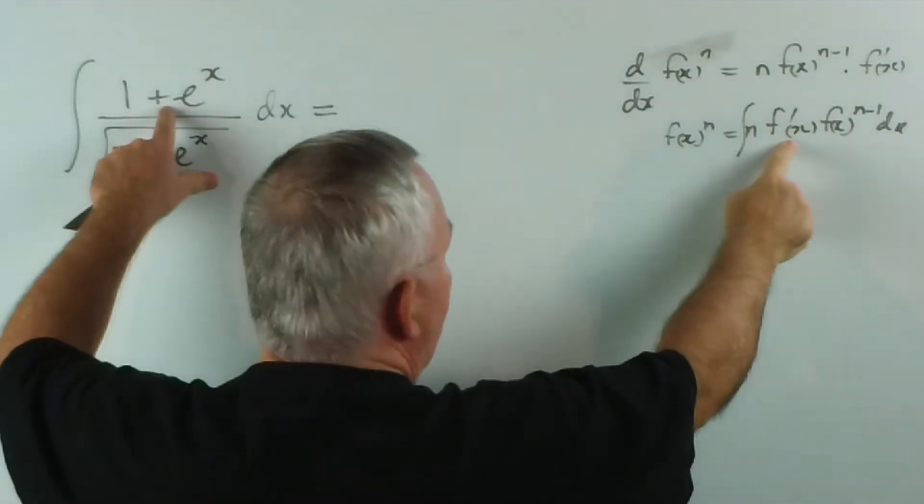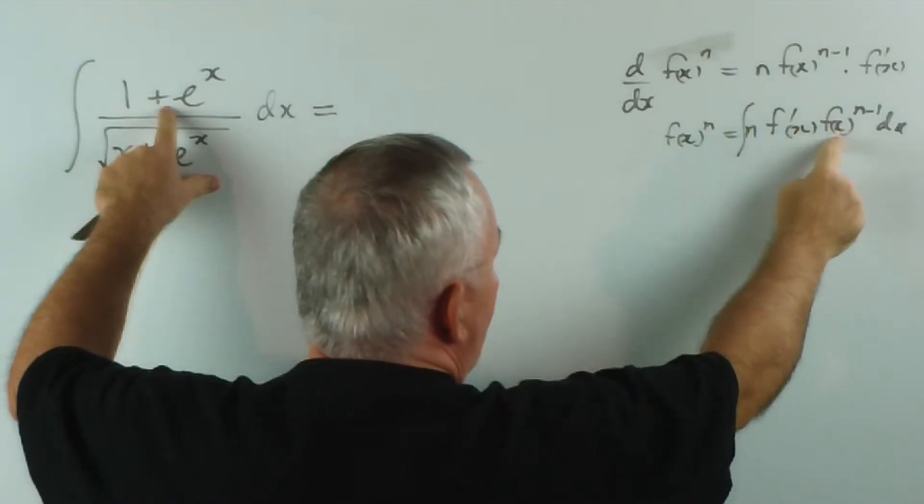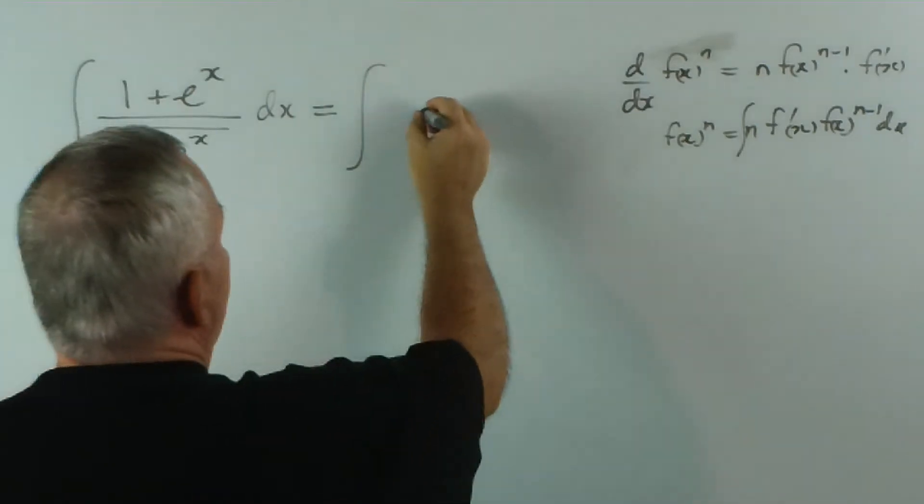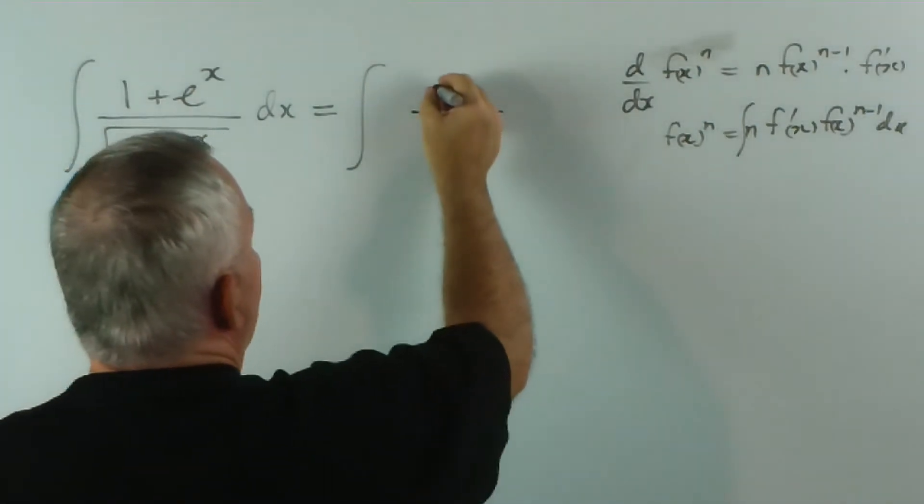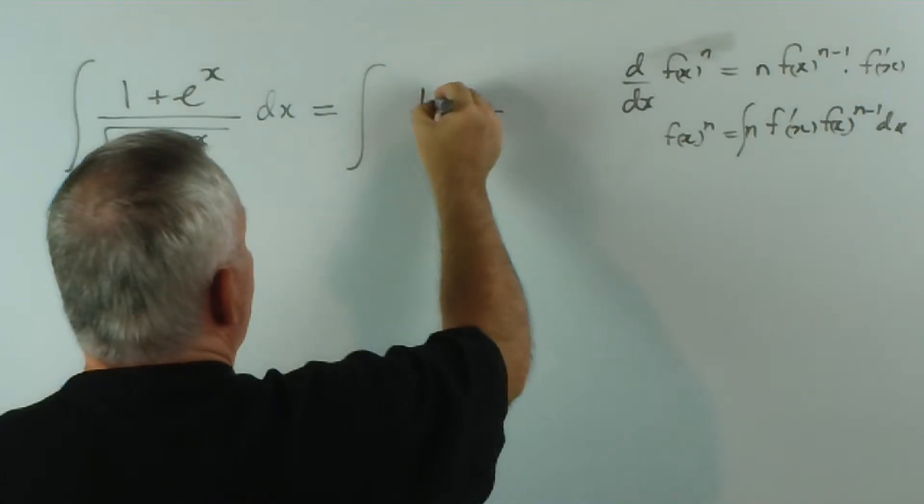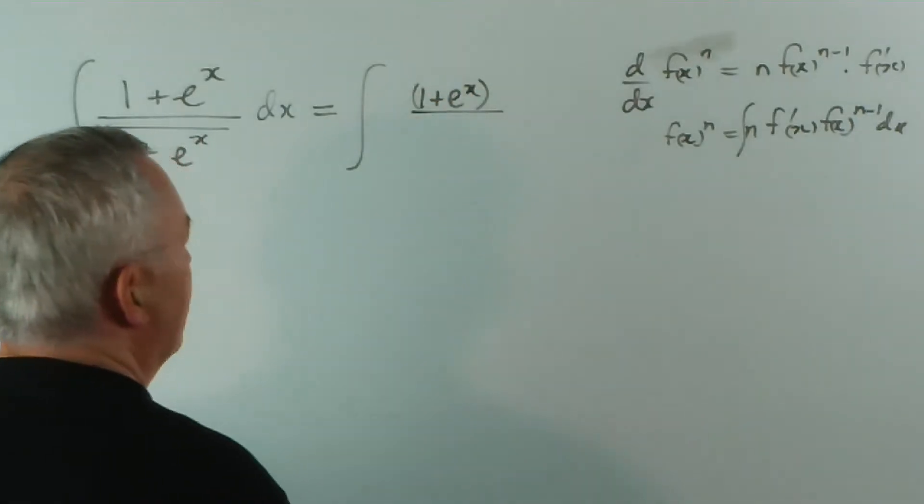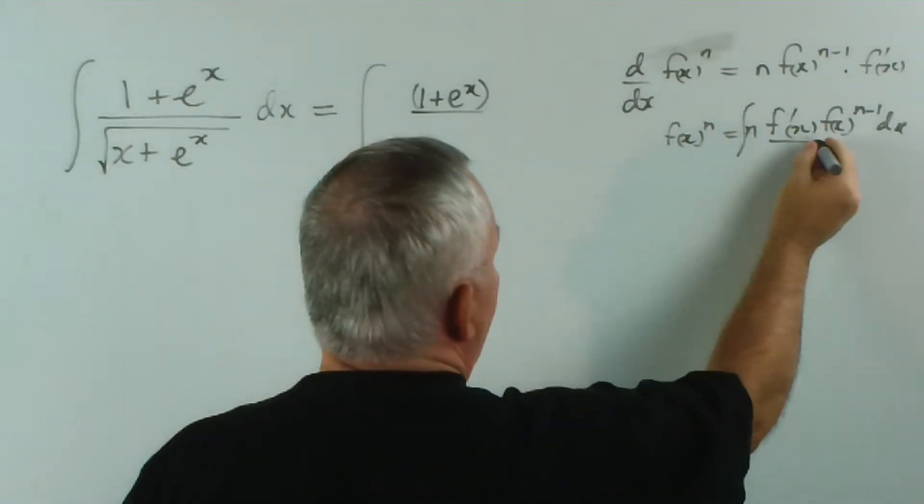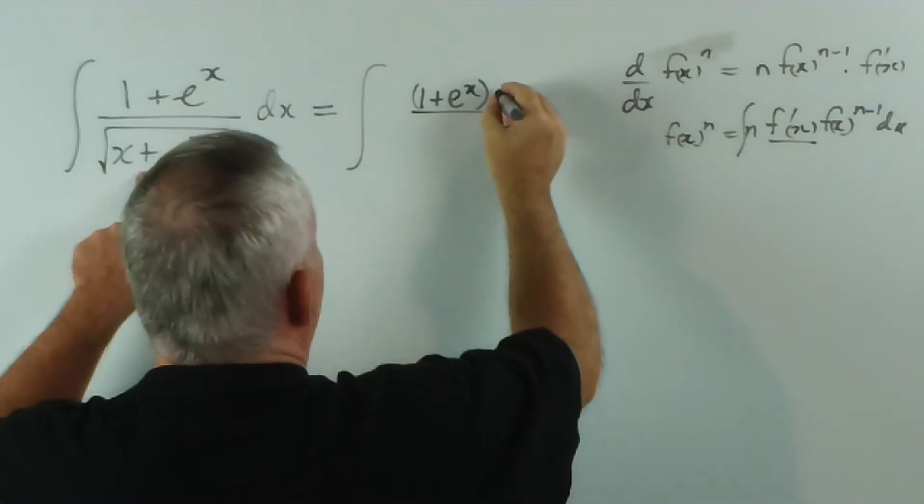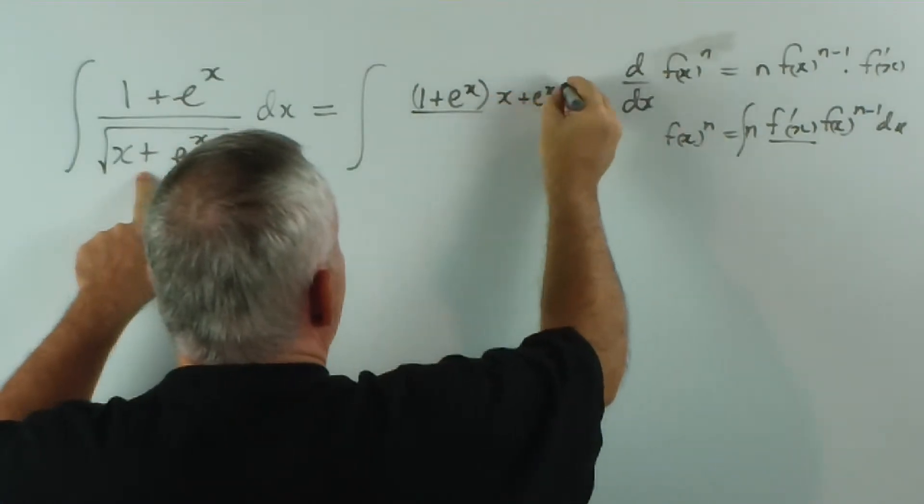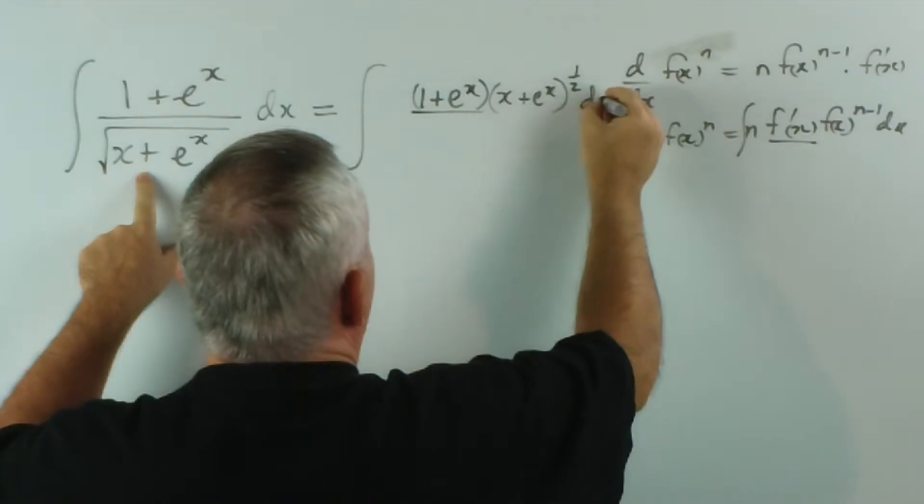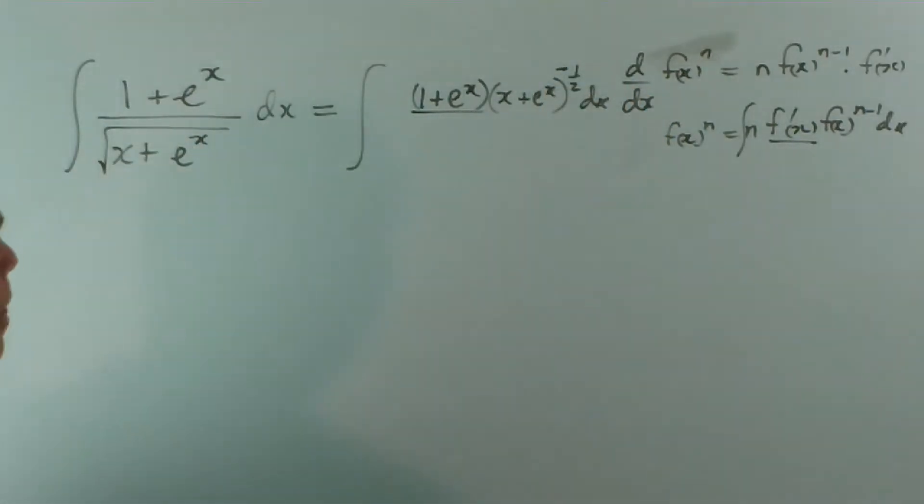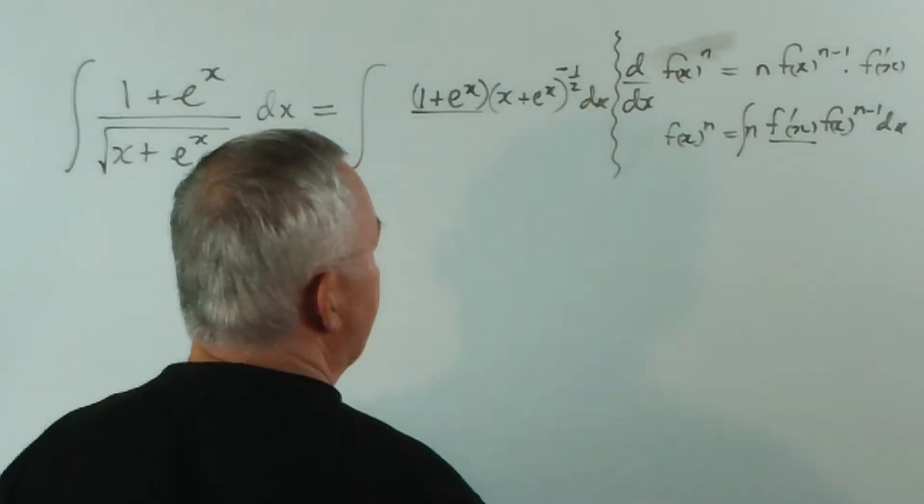Now, there's our derivative and here's our function to a power. Let's put it in that form. I'm going to leave a little gap for numbers. So, I'm going to put 1 plus e to the x, that's our derivative, and then we're going to write our function x plus e to the x to the power negative 1 half, because it's on the bottom.